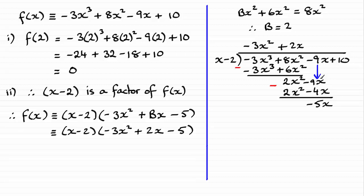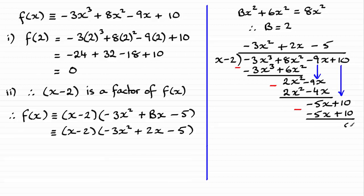We now bring down the last term, that constant plus 10. We find: what do we multiply x minus 2 by to give minus 5x plus 10? It's got to be minus 5 — put that up there. Minus 5 times x minus 2 gives minus 5x plus 10. When we subtract, we get zero — no remainder. So you can see that minus 3x squared plus 2x minus 5 is our quadratic factor.